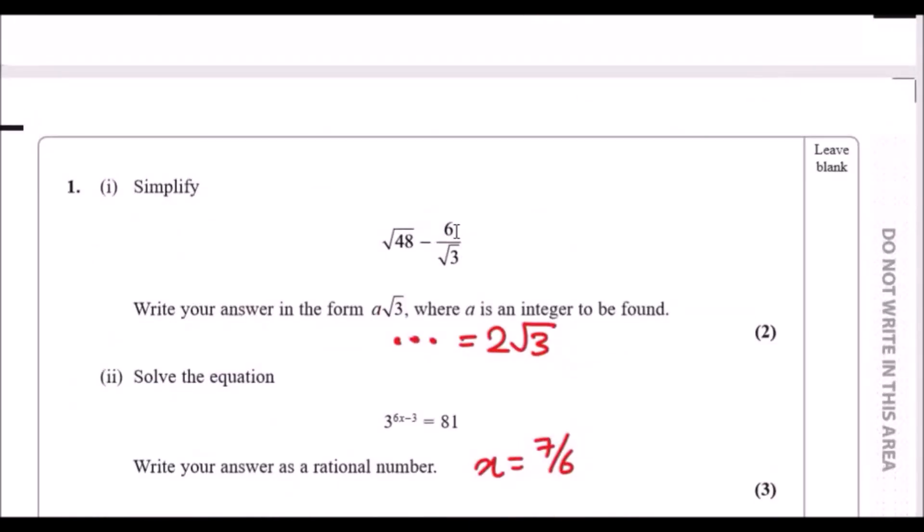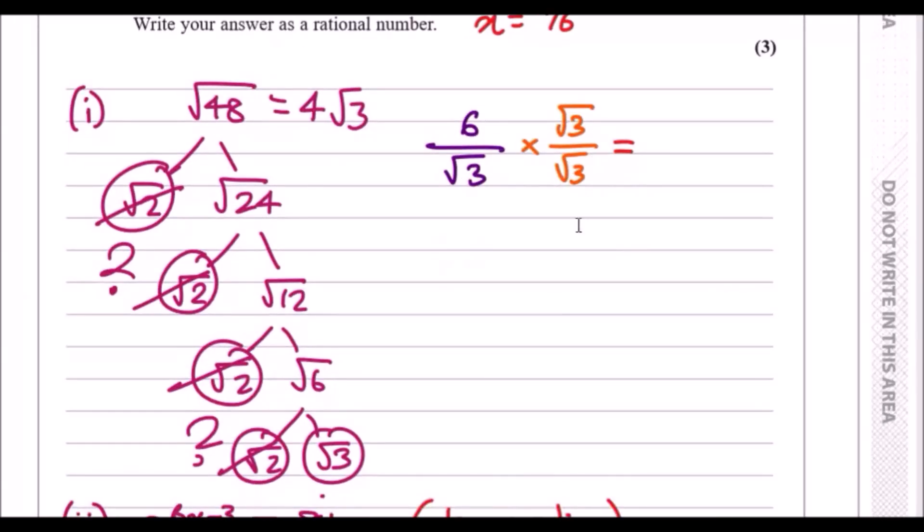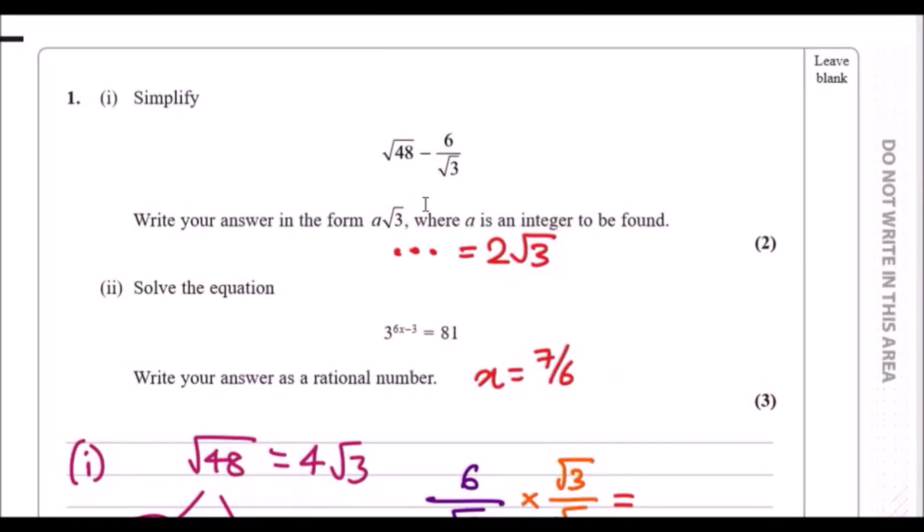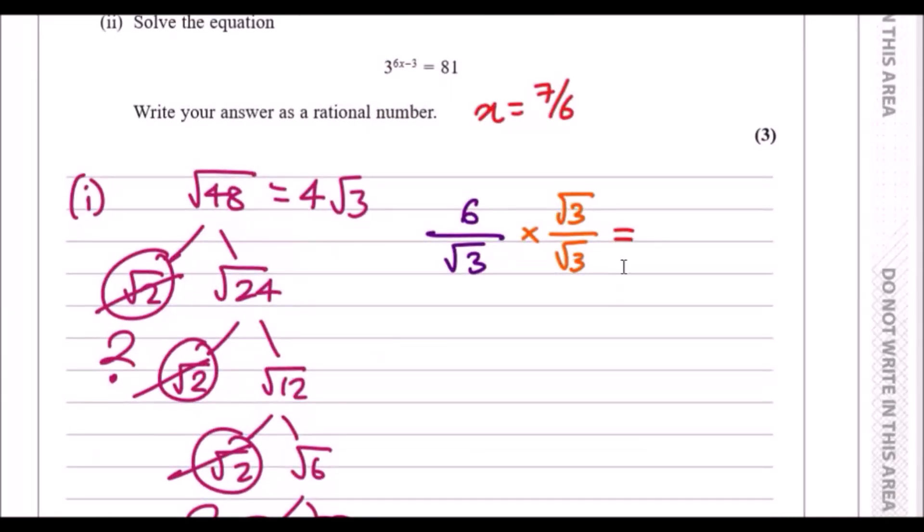Now for the next bit: 6 over root 3. We have to rationalize it. You can see there's a root 3 at the bottom, so we need to times top and bottom by root 3. That's what we always do - always times top and bottom by whatever is at the bottom. If it's something like root 3 plus 1, then you times top and bottom by root 3 minus 1 to automatically clear the bottom.